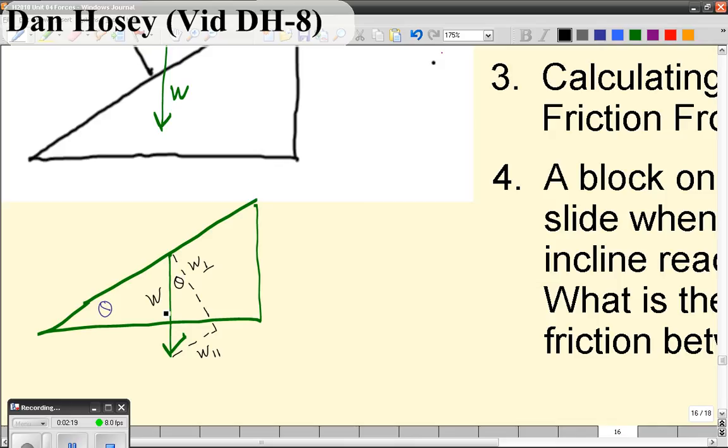Now, sort of a more rigorous way would be to say that this is perpendicular. So, the weight vector is perpendicular to the bottom of the ramp. If that's 90 degrees and this is theta, this is 90 degrees minus theta. Well, if this is 90 degrees and this is 90 minus theta, well then that must be theta.